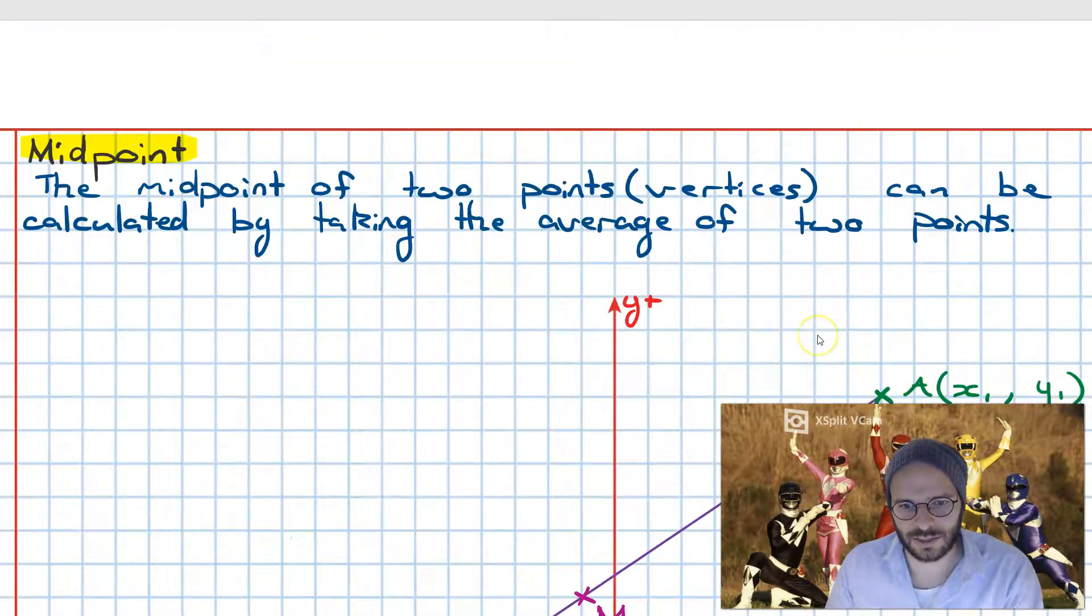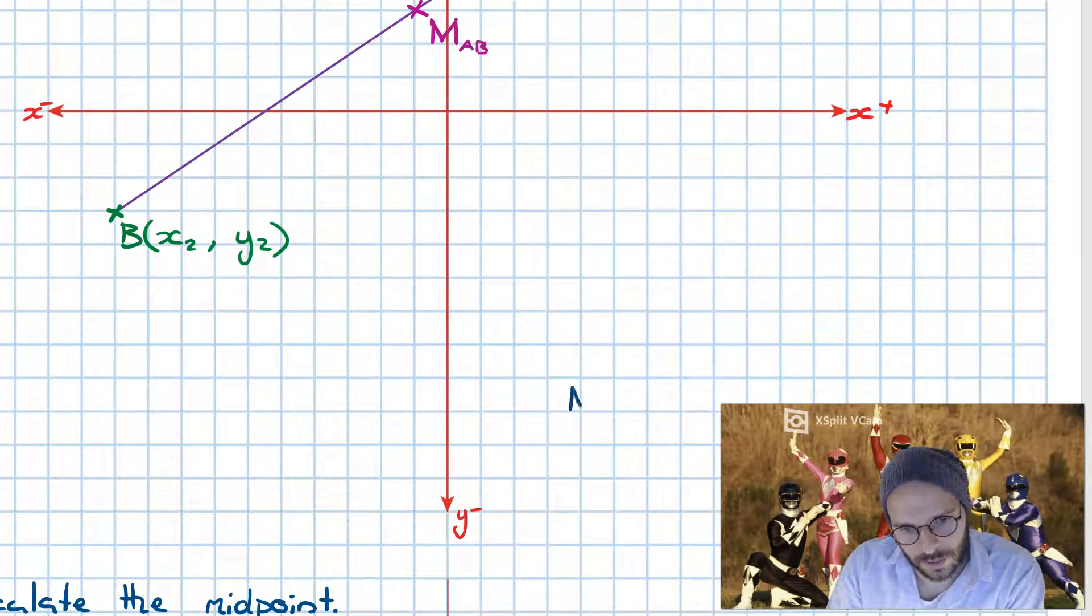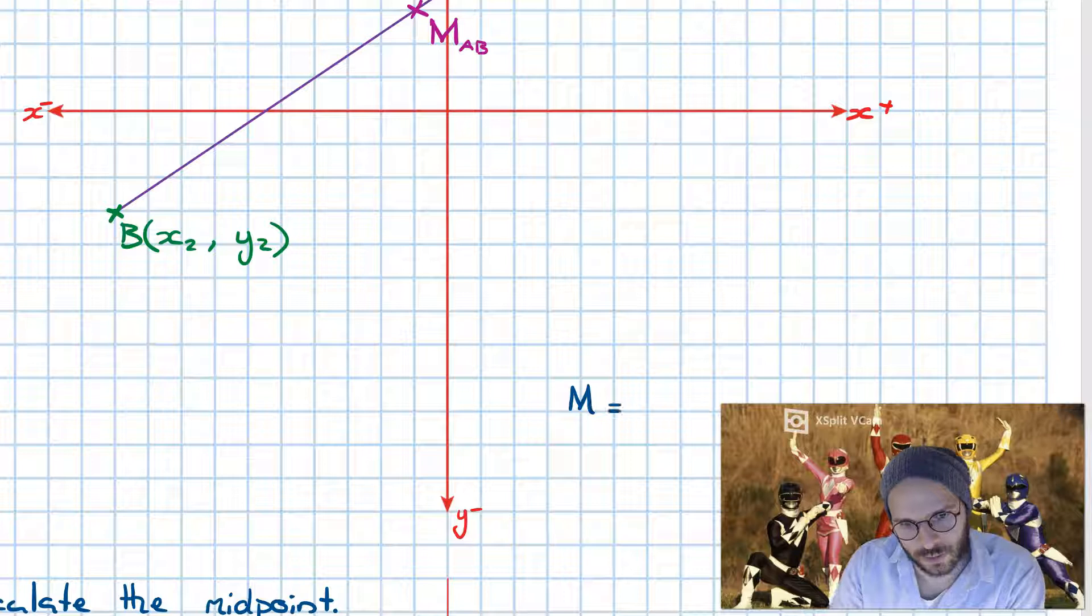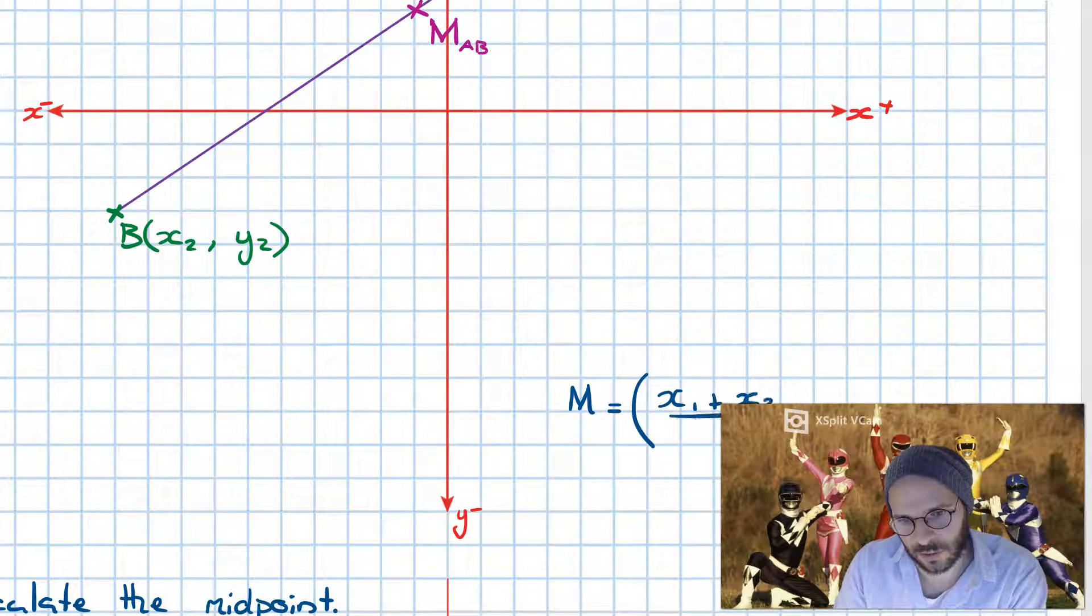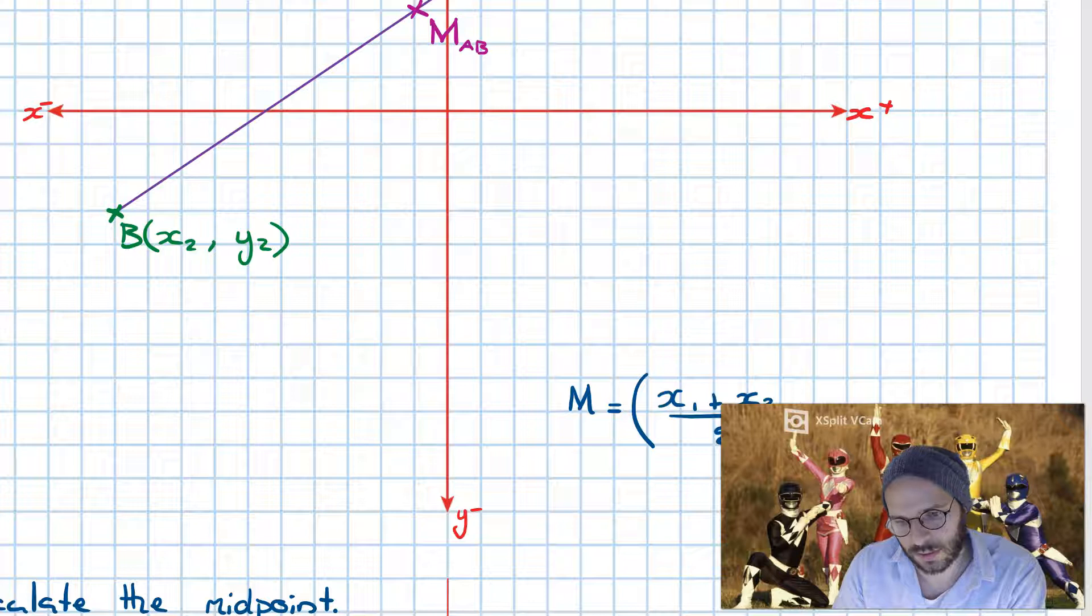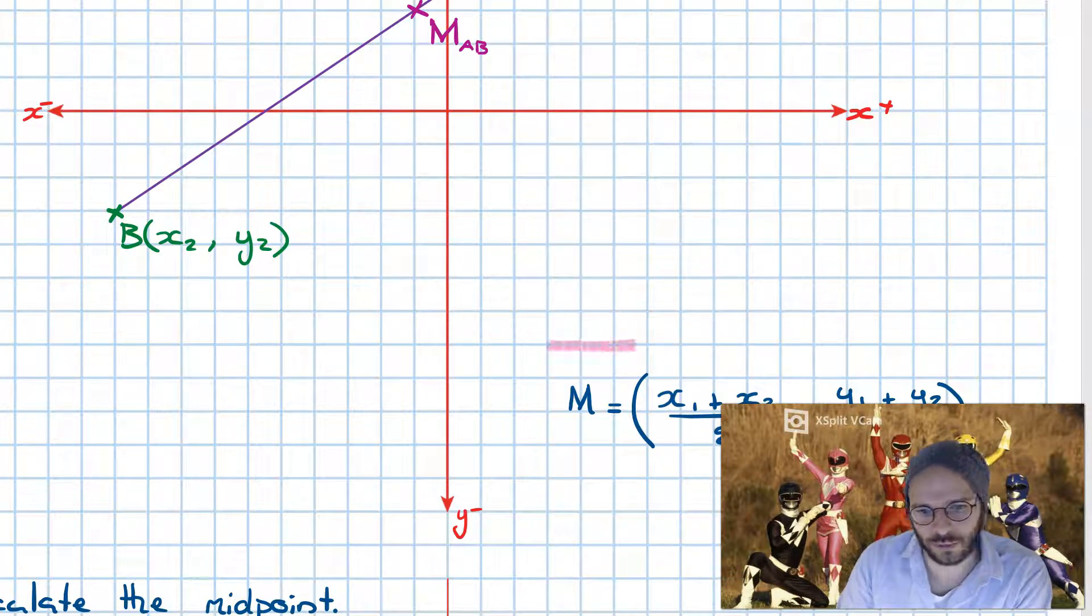Now applying this, we write M is equal to—and then because we're expecting a coordinate, so an ordered pair as our result—we open some brackets and we go x1 plus x2 all over 2, and then we're going to go y1 plus y2 all over 2 as such, and what we have here is a general formula that will tell us the midpoint between two points.